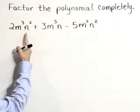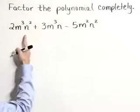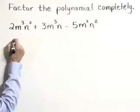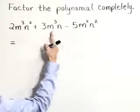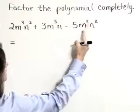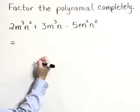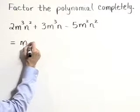To factor, we first want to determine if there is a greatest common factor. As we look at these terms, we notice that each of them has a factor of m. In fact, they at least have a factor of m squared. So the greatest common factor is going to include m squared.